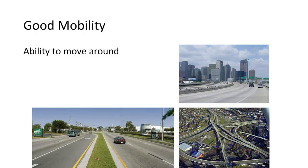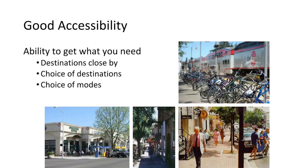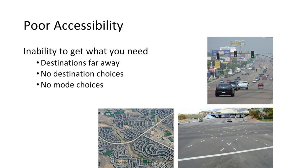Good mobility is an ability to move around; poor mobility is an inability to move around. In contrast, good accessibility is an ability to get what you need — you have destinations close by, you have a choice of destinations, and you also have a choice of modes. Poor accessibility means an inability to get what you need: destinations are far away, you have no destination choices, and you have no mode choices.